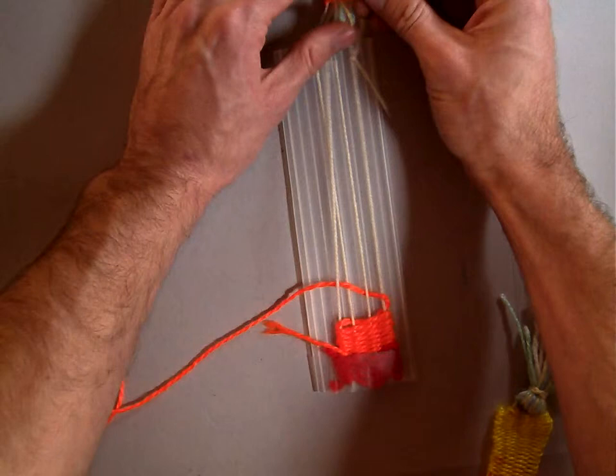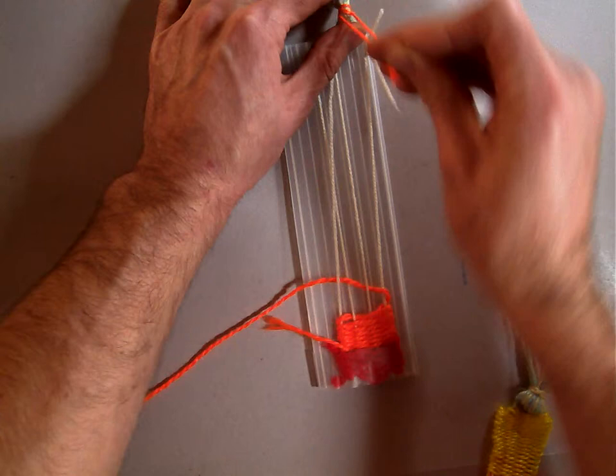And then hold your tassel, what's going to be your tassel, hold it down and just pull that fairly tight. So it's a nice tight, tightly wound around there. Then you're just going to tie another knot.